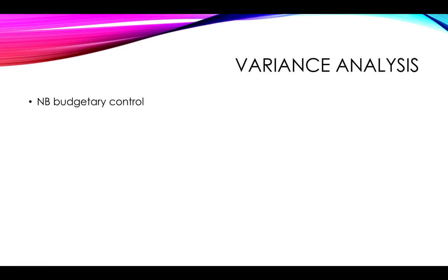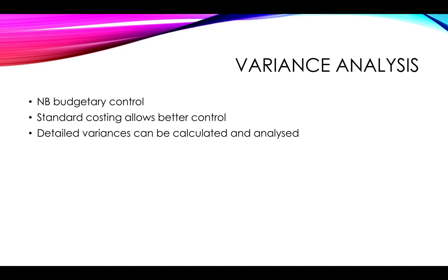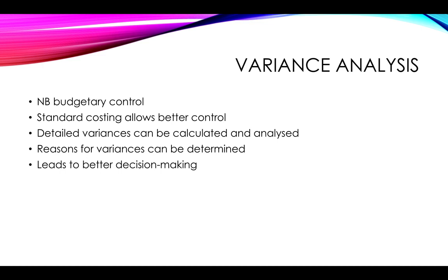You can then analyse all these variances. Remember that standard costing is vital for budgetary control — you want to look at what your plans were and how well you achieved them. Standard costing allows you to control costs better because you have a much clearer idea of what amounts should have been and a better understanding of how they differed. The detailed variances can then be calculated and analysed carefully, and the reasons determined to lead to much better decision making and goal achievement in the future.